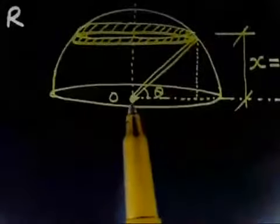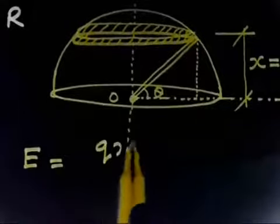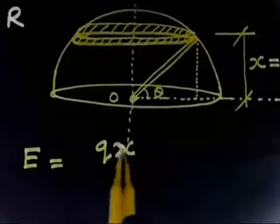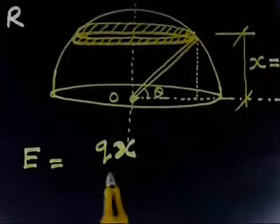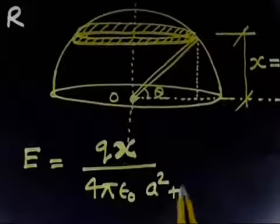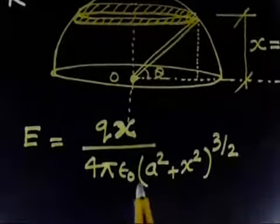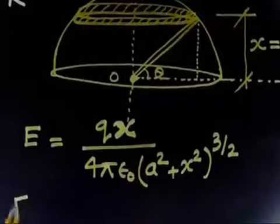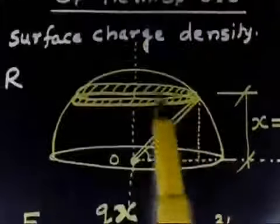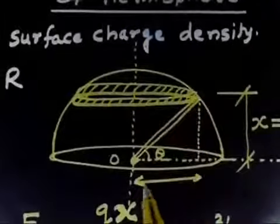We know that due to a ring, the electric field at a point along its axis at distance x is given by Qx divided by 4 pi epsilon-naught times (a squared plus x squared) to the power 3/2, where a is the radius of the ring and x is the distance. Let us apply this same expression here. What is the charge on this elemental ring?